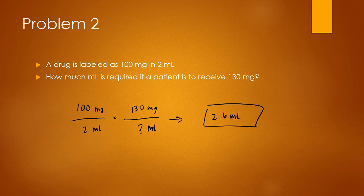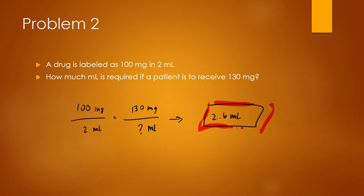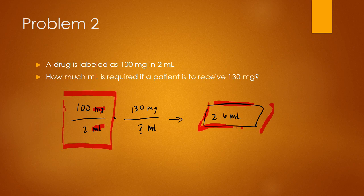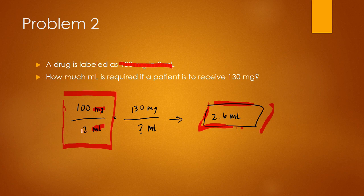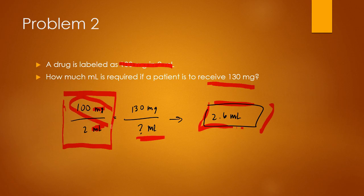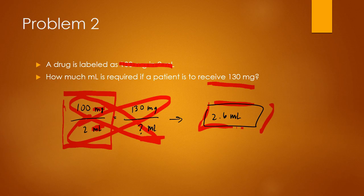So did you get 2.6 milliliters? So in order to get this again, you're given two units. You're given milligrams and milliliters. So I kept the milligrams on the top and the milliliters on the bottom. Putting in what I know and what is given, I have 100 milligrams divided by 2 milliliters equals to what is given, which is the 130 milligrams over my unknown value. Doing cross multiplication again, you're going to multiply x times 100 equals 2 times 130, and your answer will be 2.6 milliliters.